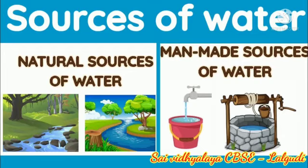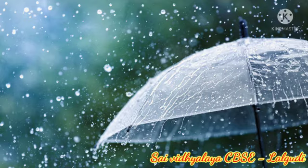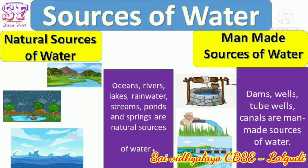Next, we see about sources of water. Rain is the main source of water. Natural sources are oceans, rivers, lakes, rainwater, streams, ponds and springs.